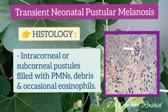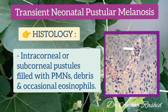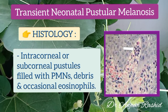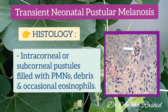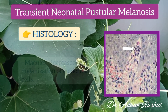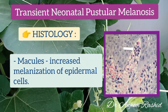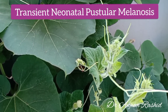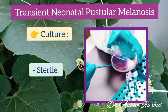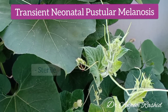Histologically, these are intracorneal or subcorneal pustules which are filled with polymorphonuclear leukocytes, debris, and occasional eosinophils. In the macular phase, there is increased melanization of epidermal cells. Culture of these lesions are sterile.